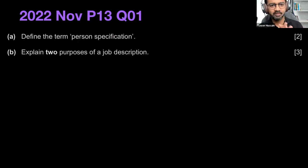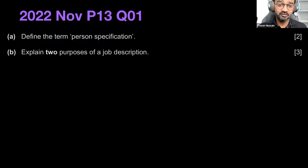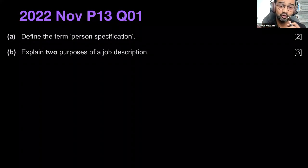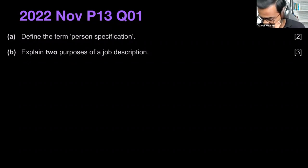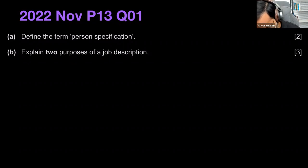Let's begin with the first question. The 4 questions in Section A will be from all different units — there are 5 units and 4 questions, so 4 different units are tested. The first one is an HR-related question. They ask us to define the term 'person specification' in Part A. This is a 2 mark question, and the recommendation is to include 2 different points — as different as they can be, do not sound repetitive.